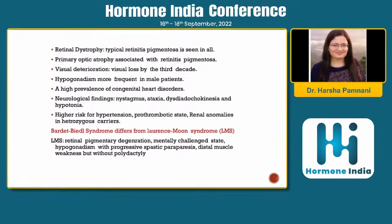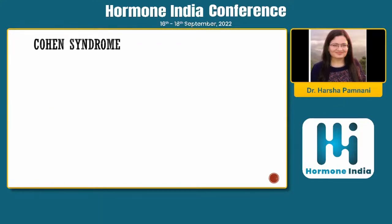Bardet-Biedl differs from Laurence-Moon syndrome: in Laurence-Moon, there is no polydactyly, but there is retinal pigmentary degeneration, mental retardation, hypogonadism, and spastic paraparesis with distal limb weakness.